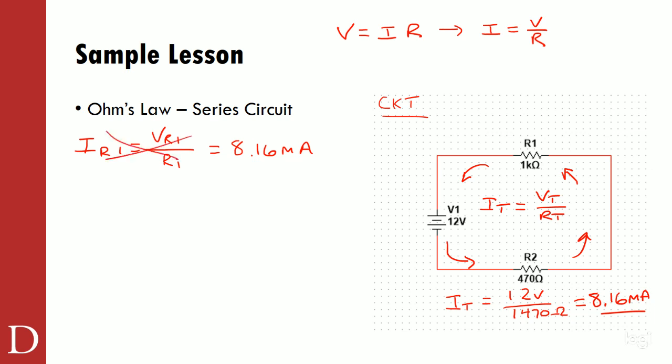I didn't actually need to do that. I did it with the total current, right? I basically negated that and I said, well, IR1 is equal to IT and IT is equal to 12 volts divided by 1,470 ohms, which is equal to 8.16 milliamps. And you can still see that even after using this thing for 10 years or so, I still write like a kindergartner.